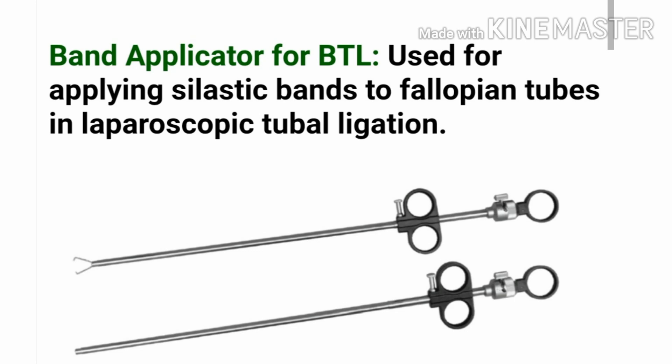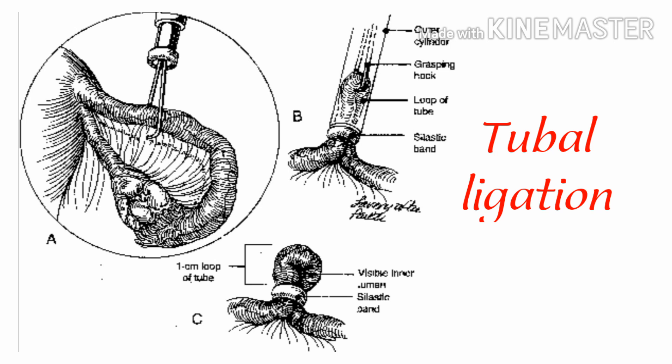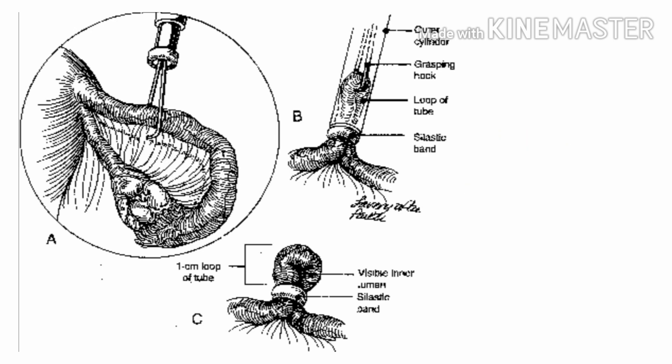This is the image of the band applicator. It is used for BTL — bilateral tubal ligation. It is used for applying elastic bands to fallopian tubes in laparoscopic tubal ligation. During tubal ligation, a two to three centimeter segment of the fallopian tube is drawn inside a narrow cone-shaped applicator. In figure A you can see how the band applicator holds the fallopian tube, in figure B the loop of tube with the grasping hook and elastic band, and in figure C the one centimeter loop of tube with the elastic band.